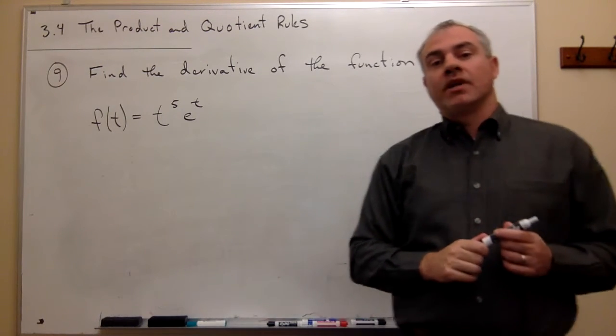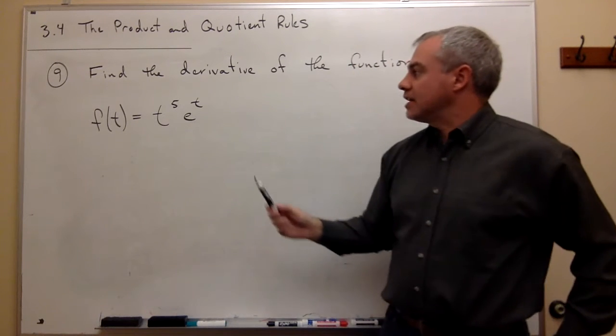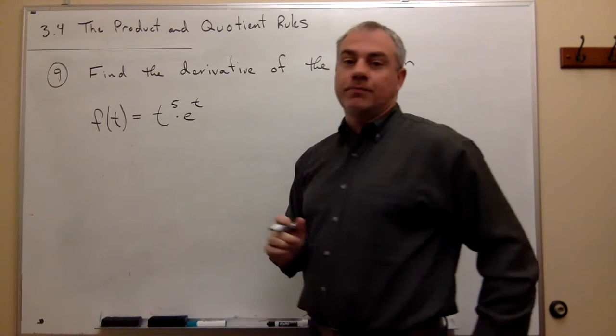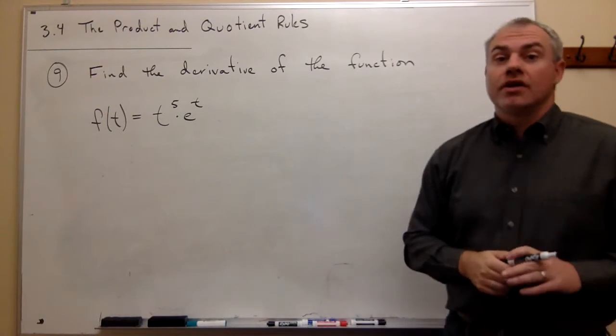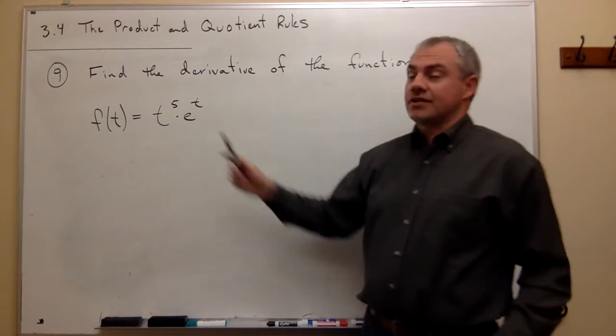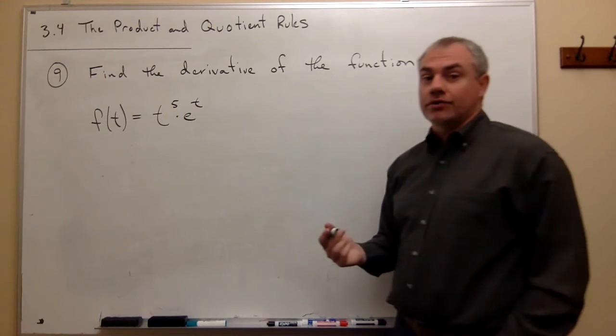To take the derivative of a function like t to the fifth e to the t, you'll notice it's two functions that are multiplied together, or in other words, it's the product of two functions. So we need to use what's called the product rule to take this derivative. Let's just have a quick reminder of what the product rule says.